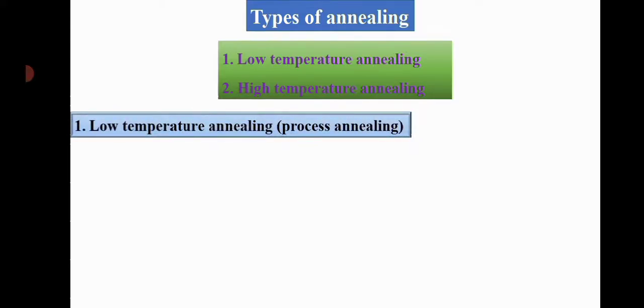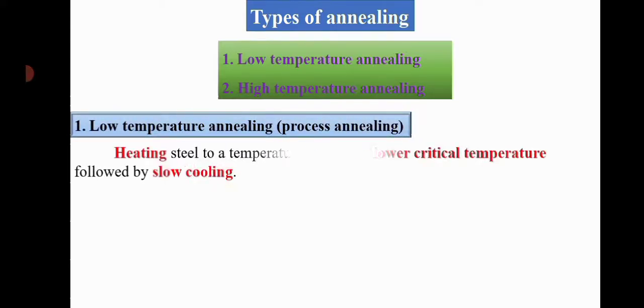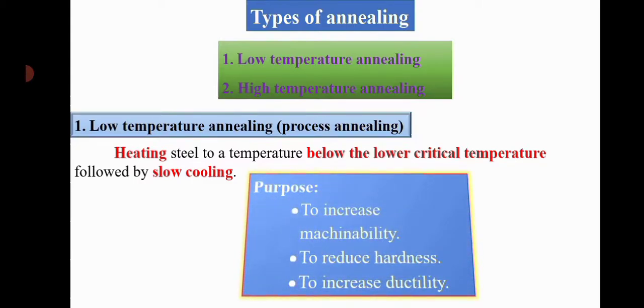Annealing is further classified into two types: low temperature annealing and high temperature annealing. Low temperature annealing, also known as process annealing, involves heating the steel below the lower critical temperature, then slow cooling. Its purposes are to increase machinability, reduce hardness, and increase ductility.